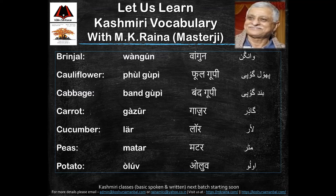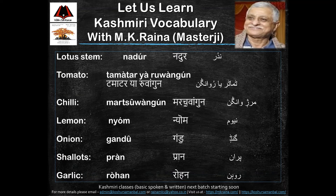Cucumber gai lor; peas gai mutar; potato gai olu; lotus stem gau nadur; tomato gau yaar wangun; chili gau mars wangun; lemon gau newm.